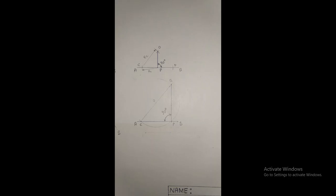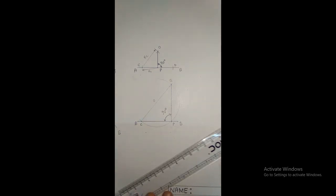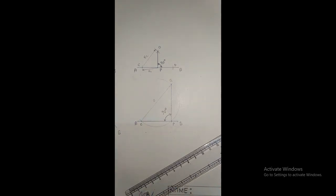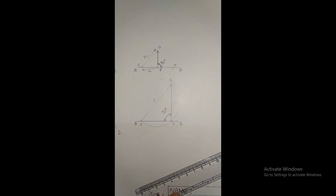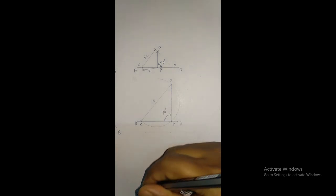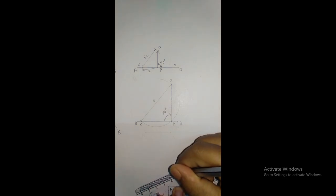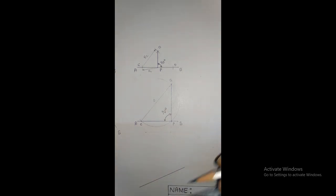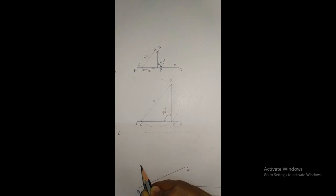A bigger question: how to draw parallel lines. One line will be given — suppose this is line AB, the given line. And one point P is given somewhere above the line.